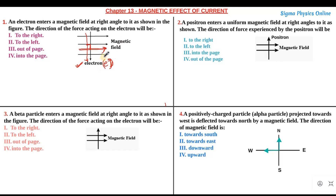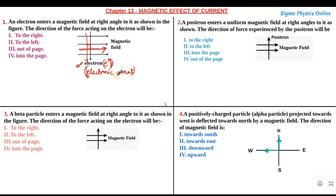Now we will align the three fingers of our left hand in accordance with Fleming's left hand rule. One very important thing to remember here is the direction of current. Electrons carry a negative charge, and the current which flows due to the flow of electrons is known as the electronic current.